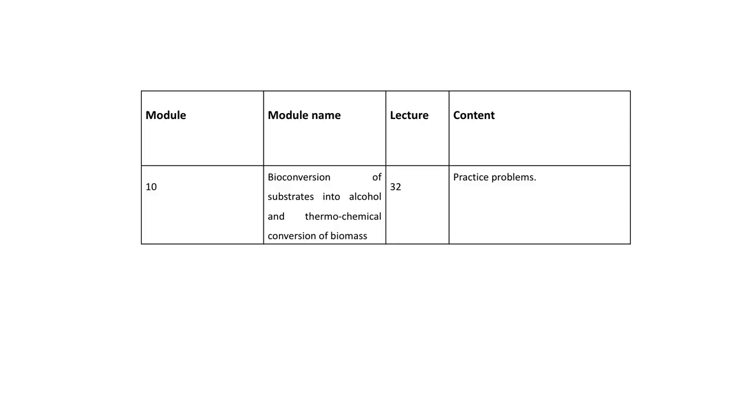Hello everyone. In this lecture, we will practice a few examples on the theory covered in the gasifier. Gasification of biomass in the gasifier mainly produces producer gas, and the gas produced from the gasifier after cleaning — by removing unwanted gases as well as particulate matter — can be utilized for power generation. Apart from that, it can also be used as a heat source. Here, we will mostly focus on utilization of the produced gas from the gasifier to produce power.